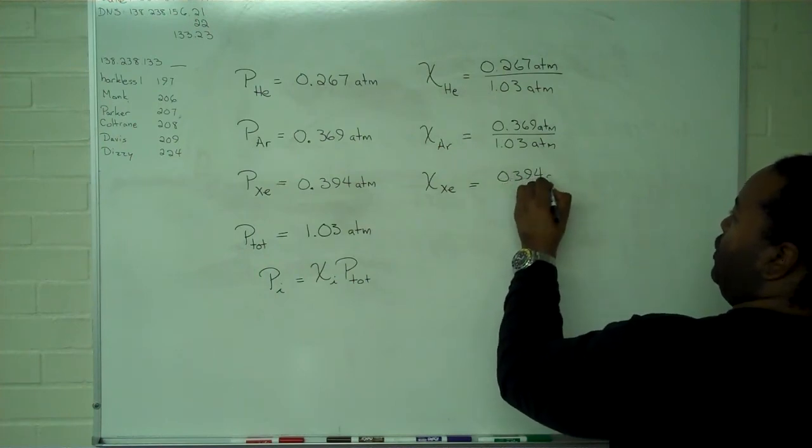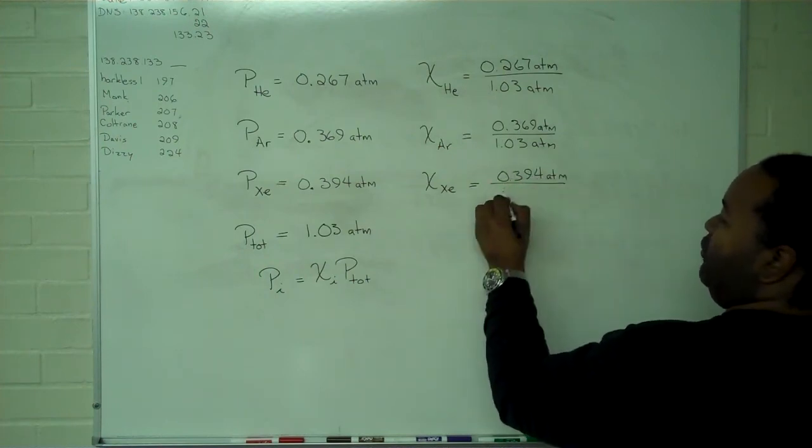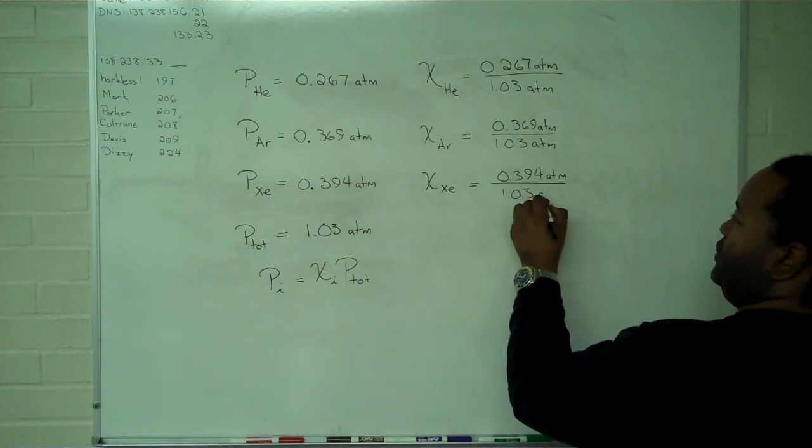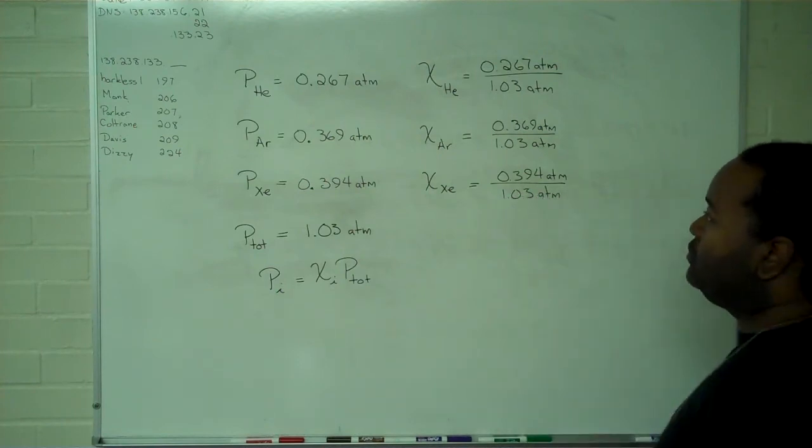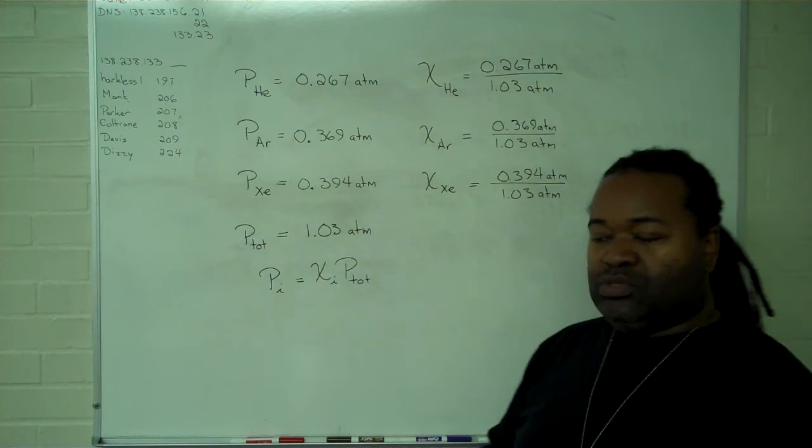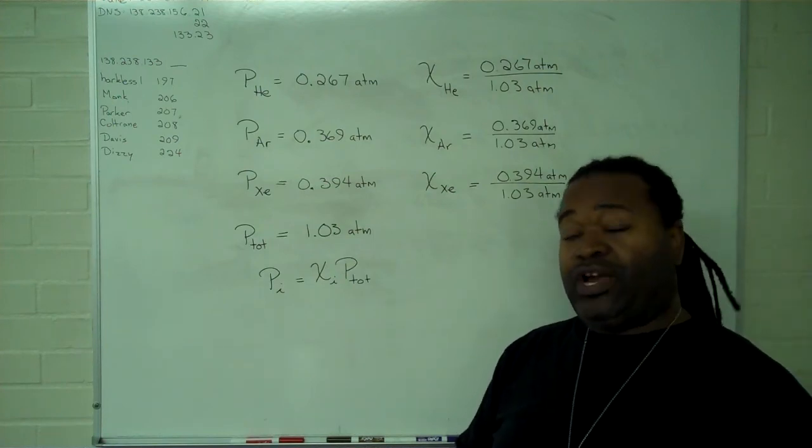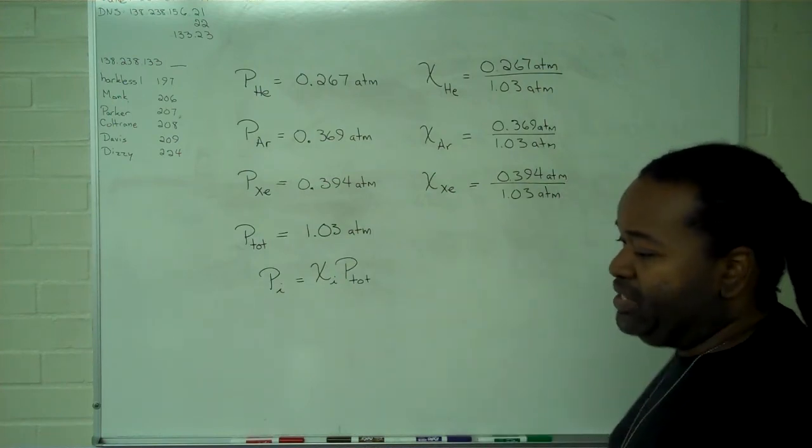And for xenon, 0.394 atmospheres divided by 1.03 atmospheres. So these will give us our mole fractions for these three gases.